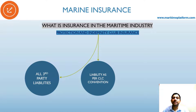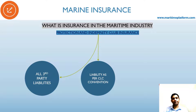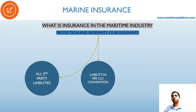Liability as per the CLC convention — the Civil Liability Convention — is specifically for oil tankers. What happened was the third-party P&I club was not able to cover such a huge amount, so the CLC convention was brought into force. Basically the liability rests with the owner of the vessel, specifically for oil tanker pollution — persistent oils such as crude oil, heavy oil, and black oils.